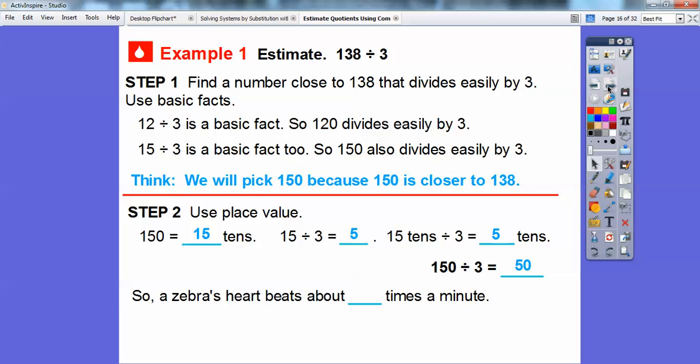So a zebra's heart beats about 50 times a minute.